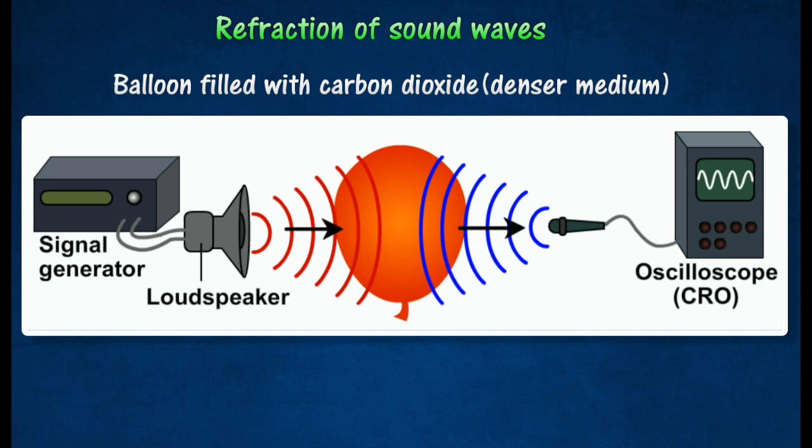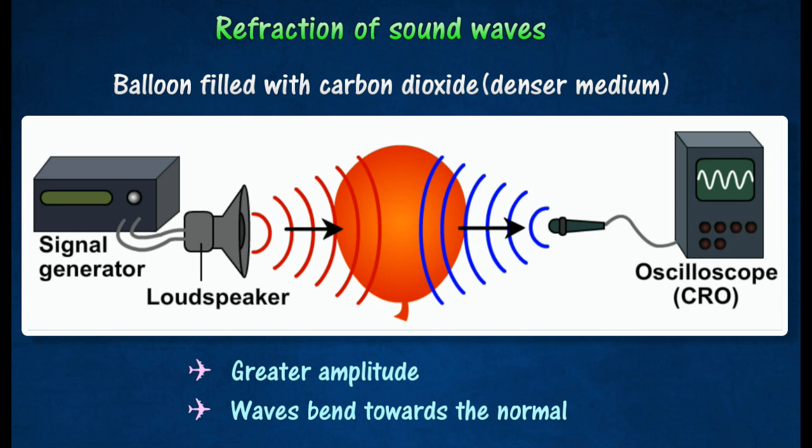The amplitude recorded by the oscilloscope is greater, which shows that the sound waves bend towards normal. This is because the speed decreases in carbon dioxide which is denser than air.